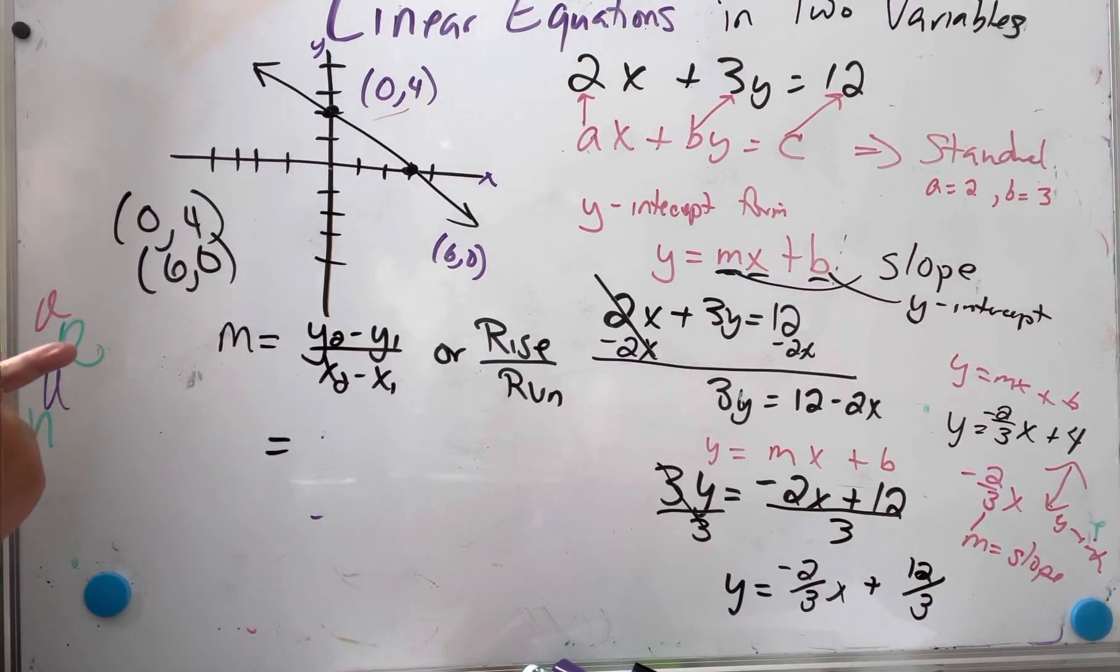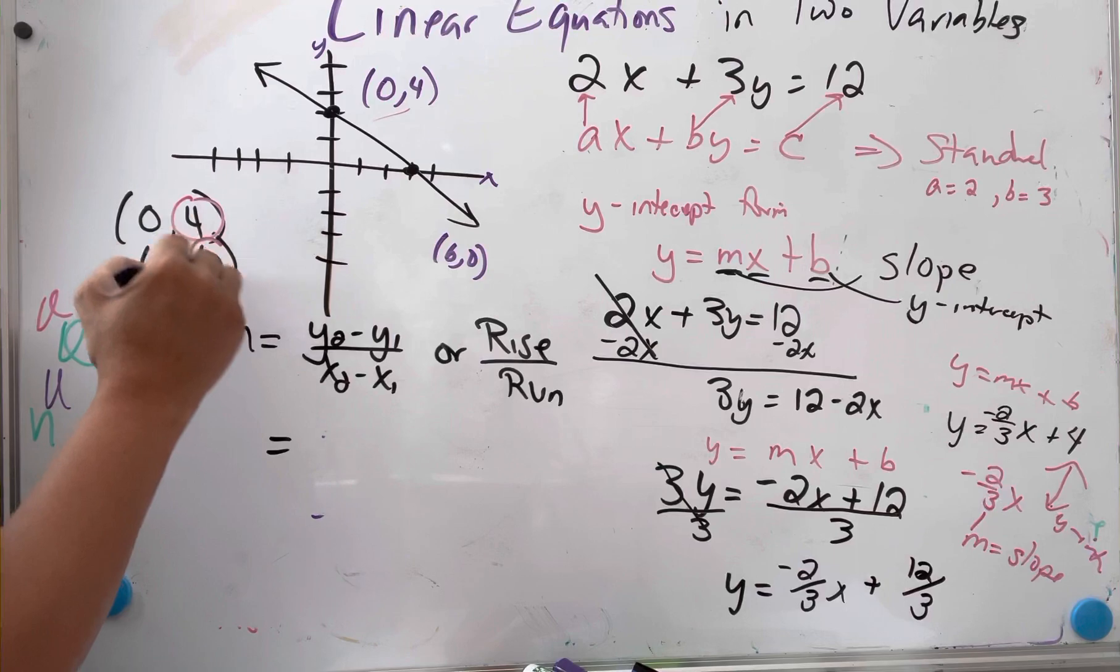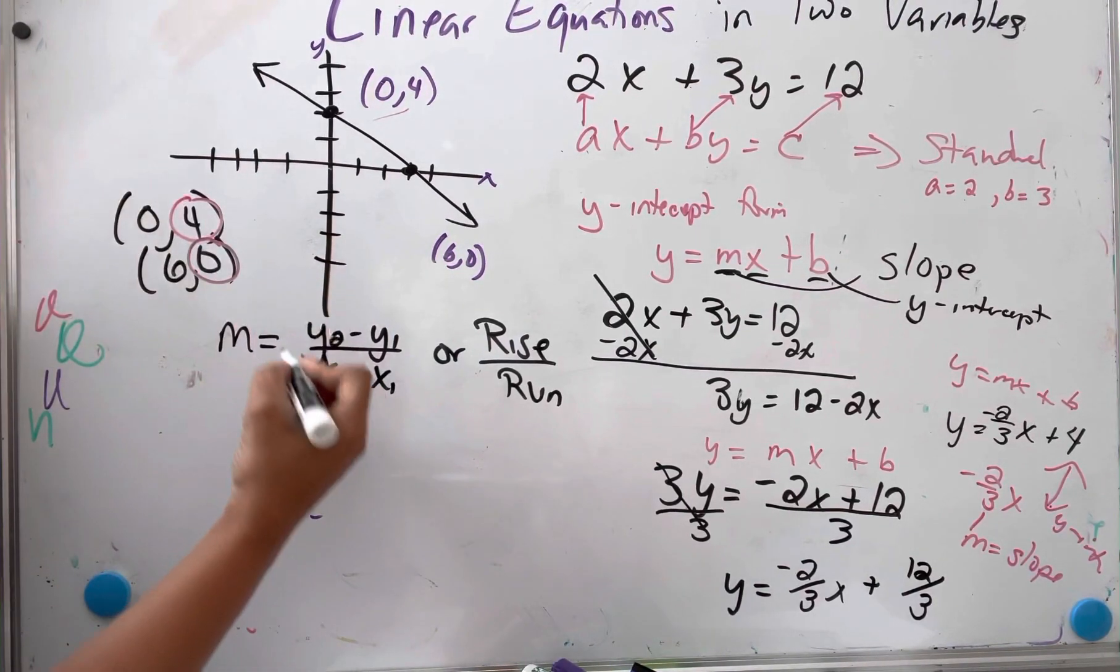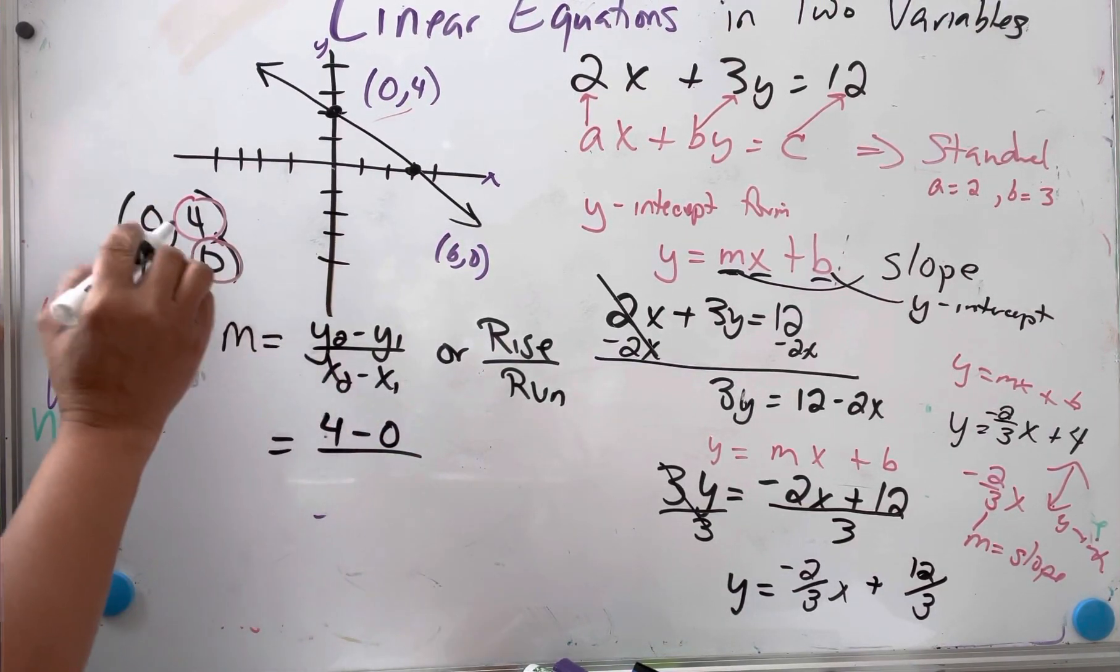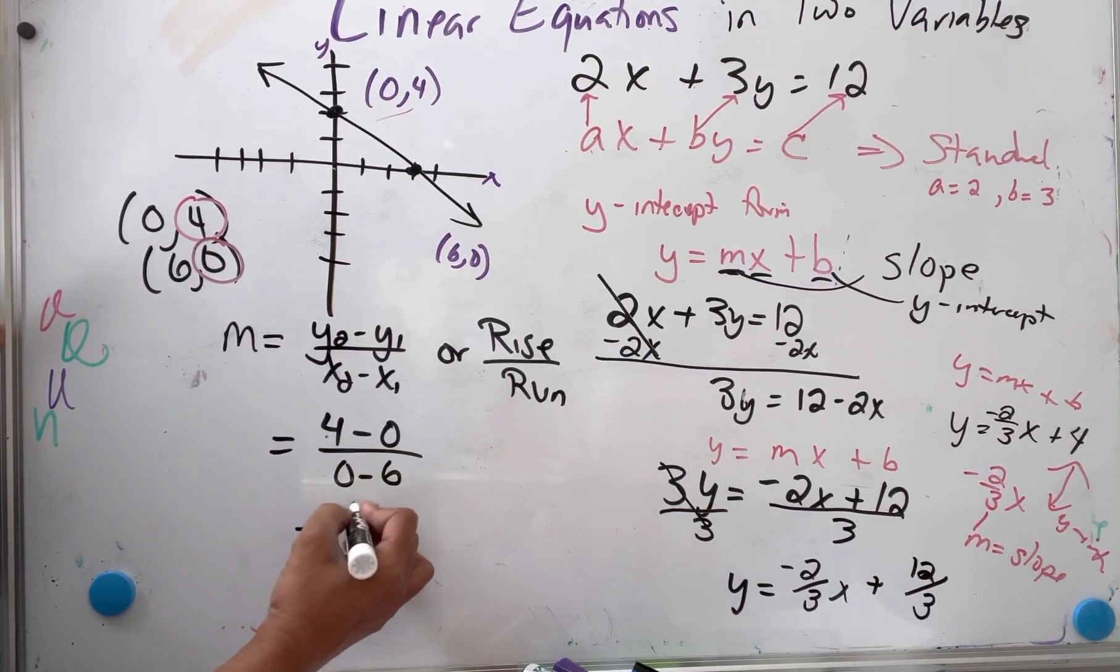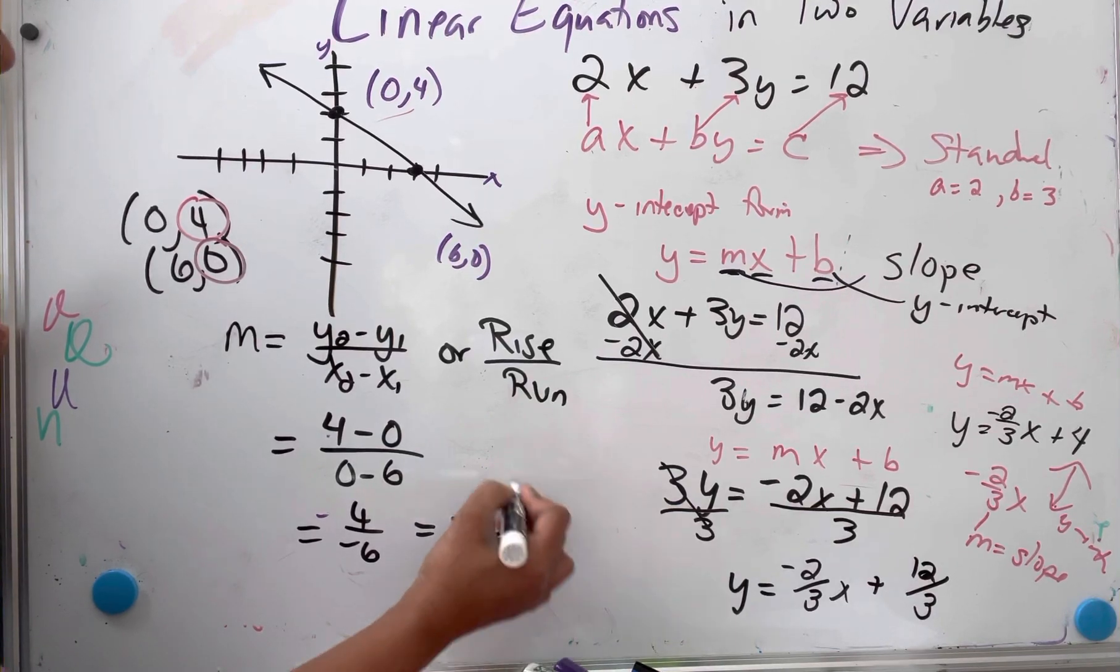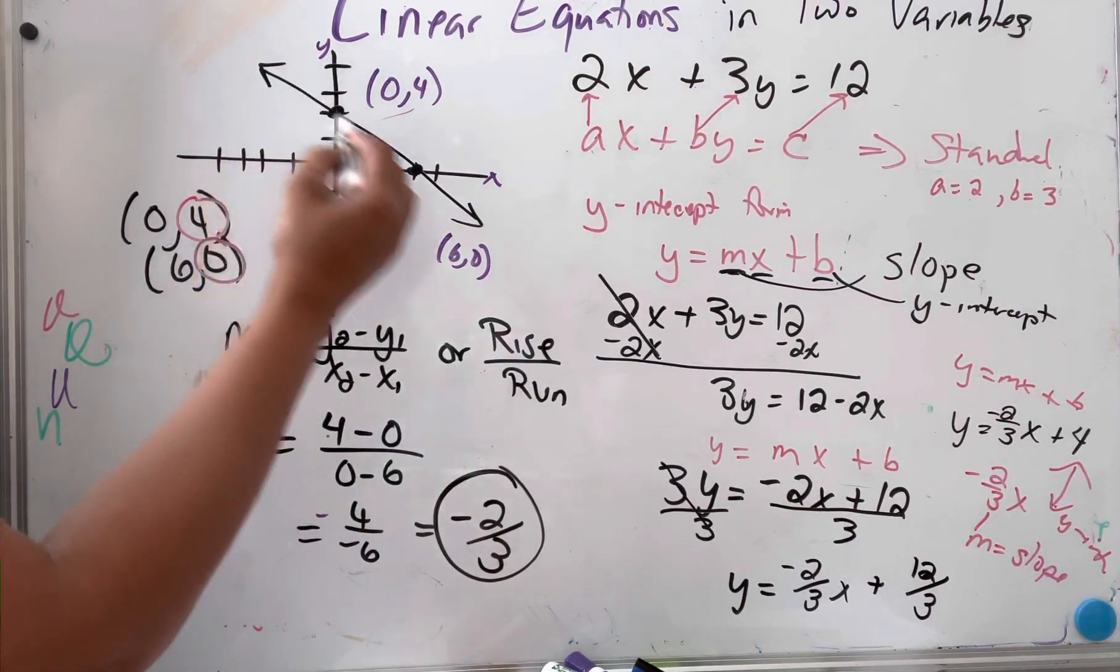We have two ordered pairs here: 0 comma 4 and 6 comma 0. I always circle my y's because I know I'm going to put them first. So y2 is 4 minus 0 all over the x's: 0 minus 6. That's going to give me 4 over negative 6, which equals negative 2/3. When I see a negative, I know that my slope is negative, it's going down here.